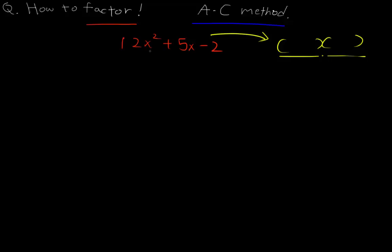Before we get into the A-C method, we have to know that the coefficient in front of x² is called a, the coefficient in front of x is called b, and the constant is called c. If you've learned the quadratic formula, you have to know how to figure these out.